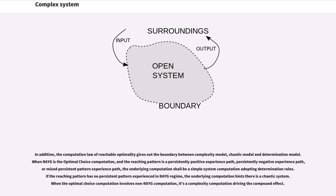In addition, the computation law of reachable optimality gives out the boundary between complexity model, chaotic model and determination model. When RAYG is the optimal choice computation, and the reaching pattern is a persistently positive experience path, persistently negative experience path, or mixed persistent pattern experience path, the underlying computation shall be a simple system computation adopting determination rules. If the reaching pattern has no persistent pattern experienced in RAYG regime, the underlying computation hence is a chaotic system. When the optimal choice computation involves non-RAYG computation, it's a complexity computation driving the compound effect.